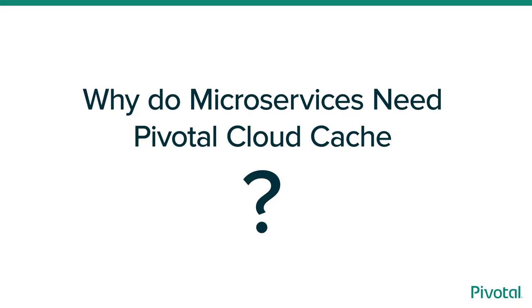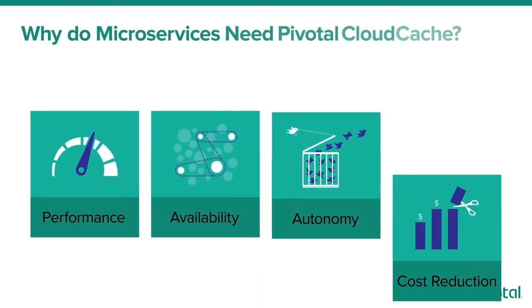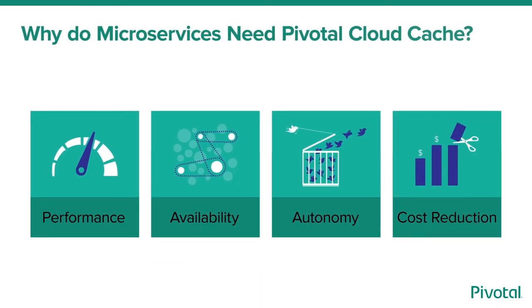Why do microservices need Pivotal Cloud Cache? Pivotal Cloud Cache adds rock-solid performance and availability to applications built using microservices, fosters team autonomy, and provides a cost-effective approach to modernizing legacy systems.